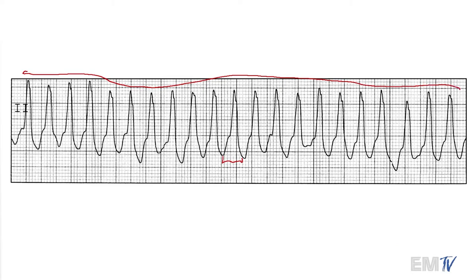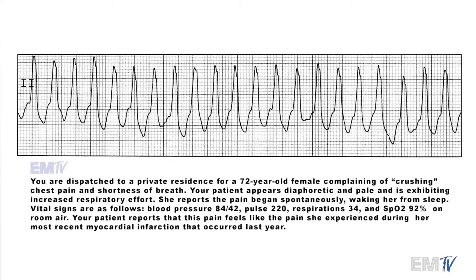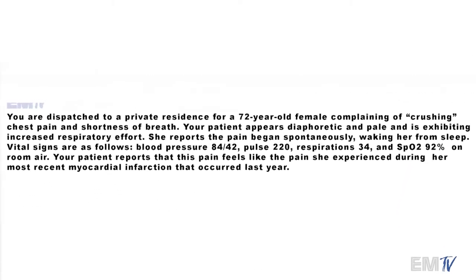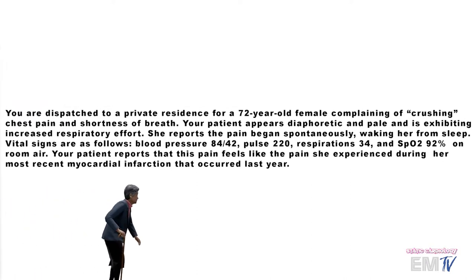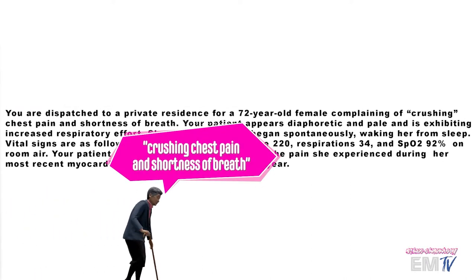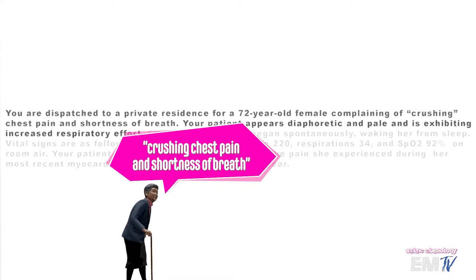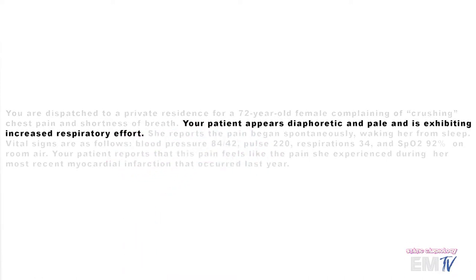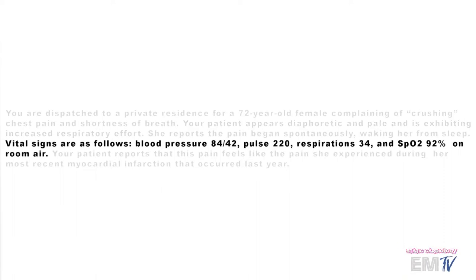Let's next examine the scenario. We're dispatched to a private residence for a 72-year-old female complaining of crushing chest pain and shortness of breath. The patient appears diaphoretic and pale and is exhibiting increased respiratory effort. Vital signs are as follows: blood pressure of 84 over 42, pulse of 220, respiration is 34, and SpO2 of 92% on room air.